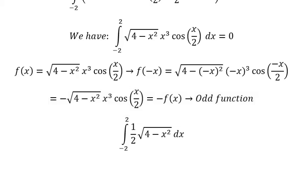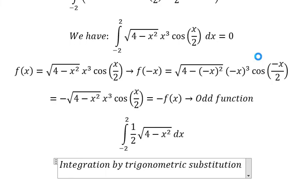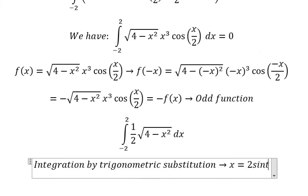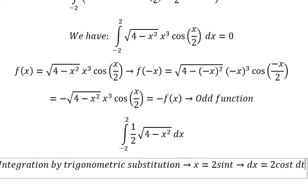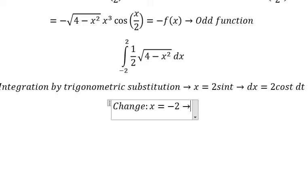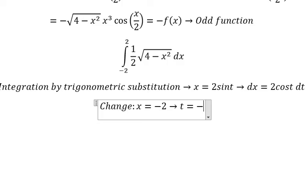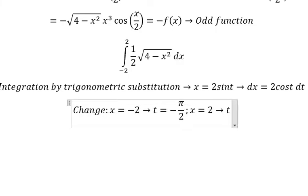Now I will use integration by trigonometric substitution. I put x equal to 2 sin(t), so dx equals 2 cos(t) dt. Next we need to change the boundary: if x equals negative 2, then t should be negative π over 2; if x equals 2, then t should be π over 2.